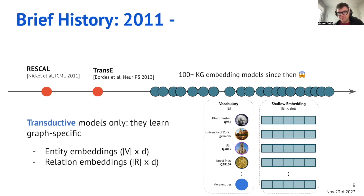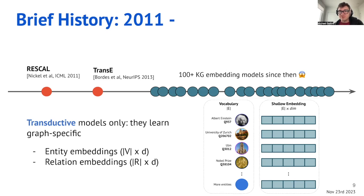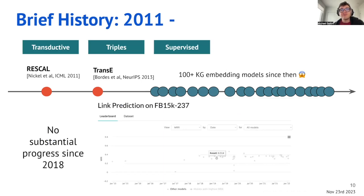A brief history of graph representation learning for multi-relational graphs: it started more than 10 years ago with RescaL and TransE — seminal models that are still surprisingly strong baselines if tuned well. These are all transductive models that learn huge entity and relation embedding tables. If you have 100 million entities, they learn embedding matrices with 100 million rows. More than 100 papers followed with small improvements, but they all focus on triples and a supervised learning approach.